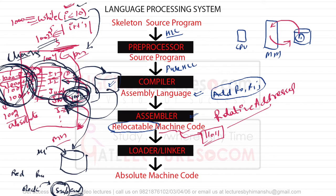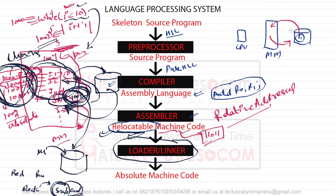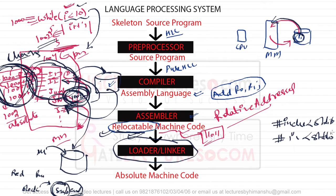With relocatable code, it is easy to move the program from one location to another because we can change the base address and recalculate the new addresses accordingly. This relocatable code is then given to the loader or linker. The responsibility of the loader is to load the program from secondary memory to main memory. The responsibility of the linker is to link different modules - such as `#include <stdio.h>` or `#include <stdlib.h>`.